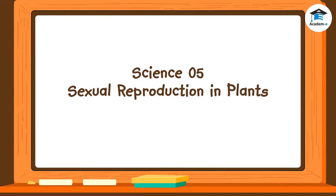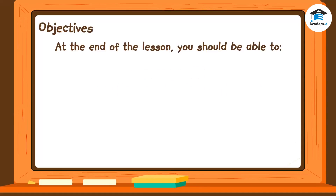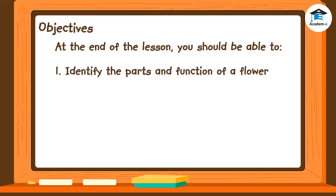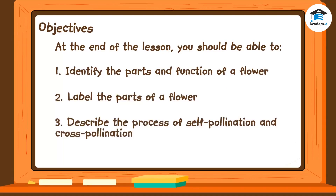Science 5: Sexual Reproduction in Plants. Objectives: At the end of the lesson, you should be able to identify the parts and function of a flower, label the parts of a flower, and describe the process of self-pollination and cross-pollination.